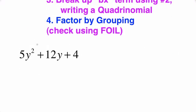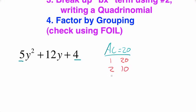Our first problem is 5y squared plus 12y plus 4. Here, AC is going to be 5 times 4, so AC equals 20, or positive 20. Now we're going to list all the factor pairs of 20: that's 1 times 20, 2 times 10, or 4 times 5.